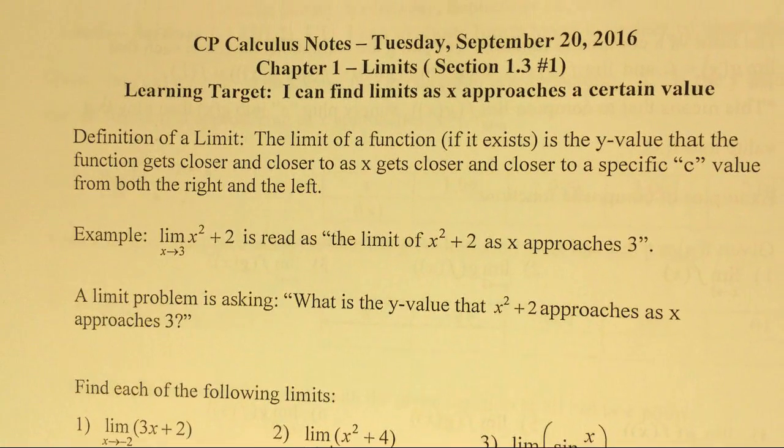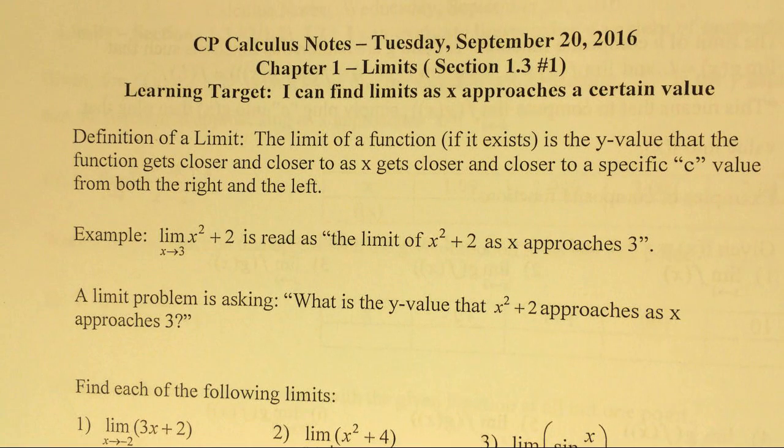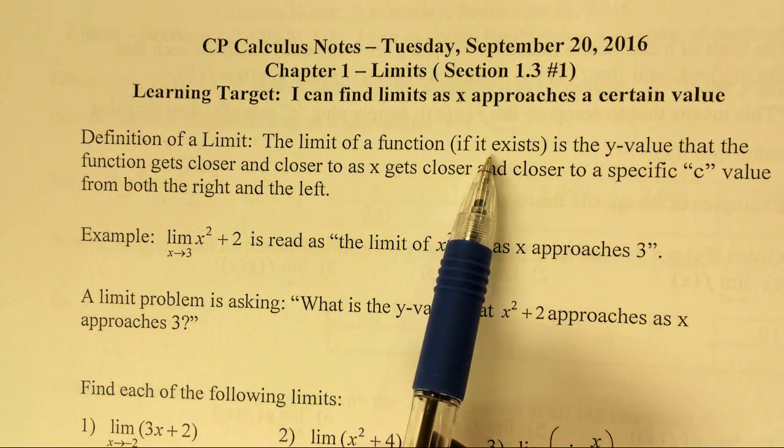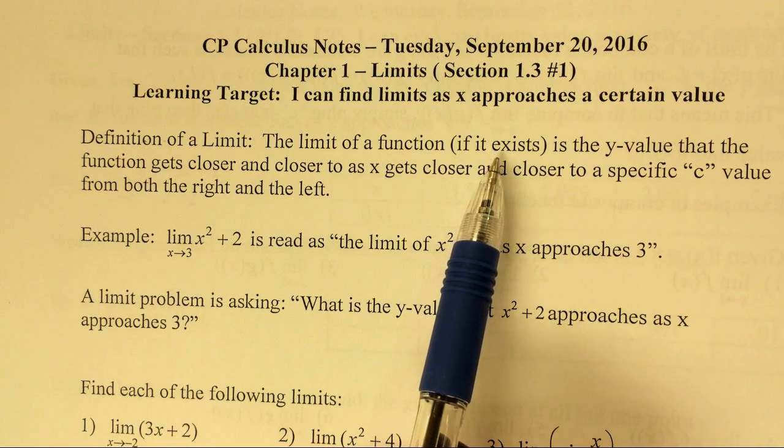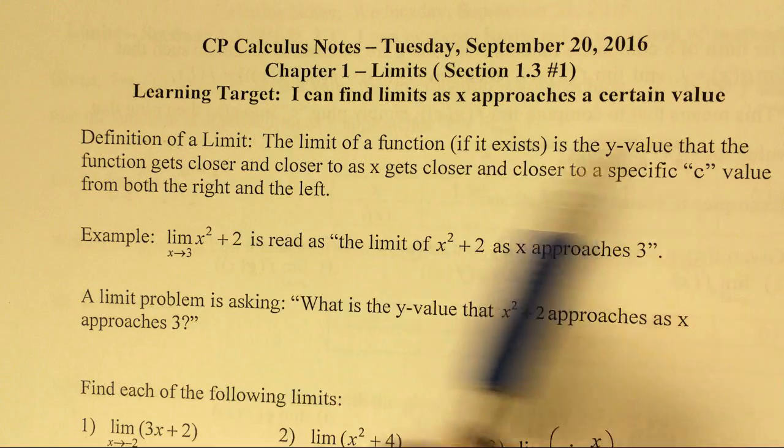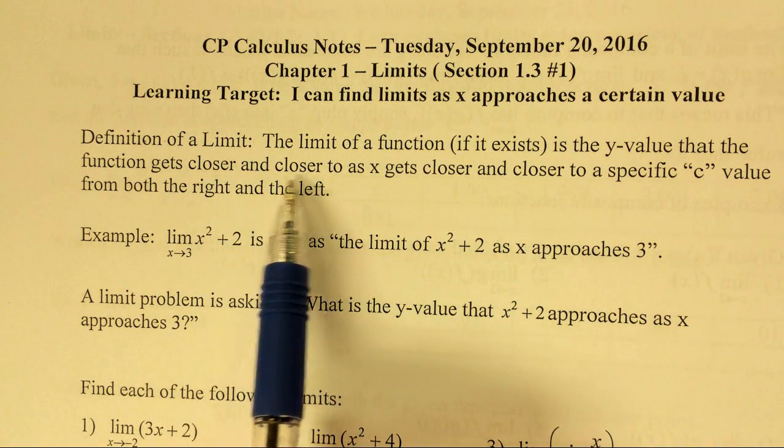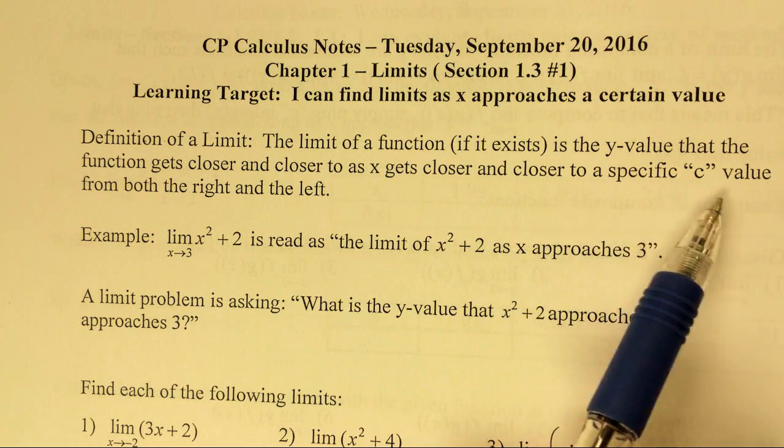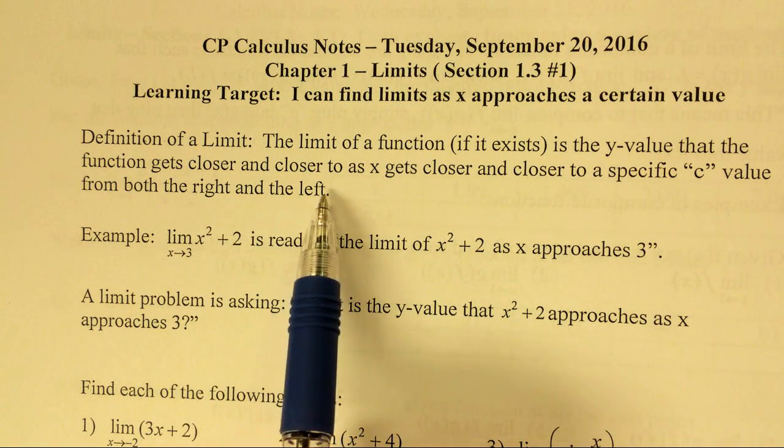Okay, so starting with definition of a limit. The limit, if it exists, because sometimes we might have a limit that does not exist, is the y-value that the function gets closer and closer to as x gets closer and closer to a specific c value from both the right and the left.